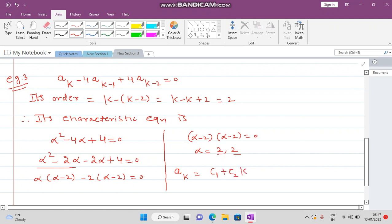a_k = (c1 + c2*k) times 2 raised to the power k. Here, as this subscript is in k, that is why we are writing A_k. If it is in n, then write here n. It all depends on what subscript you are using.